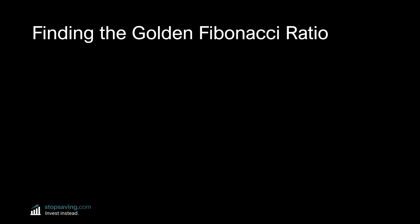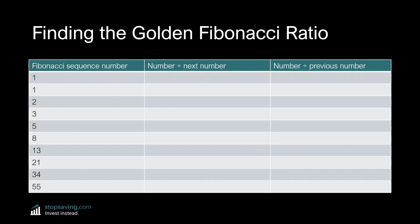The Fibonacci sequence can be used to derive something called the golden Fibonacci ratio. You'll find this all over nature too, but also on your favorite price chart. Here's a table showing how we get the golden ratio, starting with Fibonacci retracements. Divide the current number in the sequence by the number that comes after it. For example, 1 divided by 1 is 1, 2 divided by 1 is 0.5, and 3 divided by 2 is 0.667. If you keep doing this, the number gets closer and closer to 0.618 — the golden Fibonacci ratio used for Fibonacci retracements.